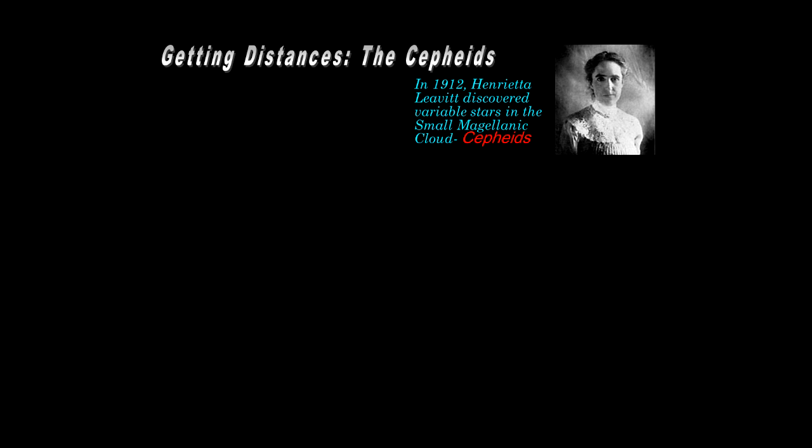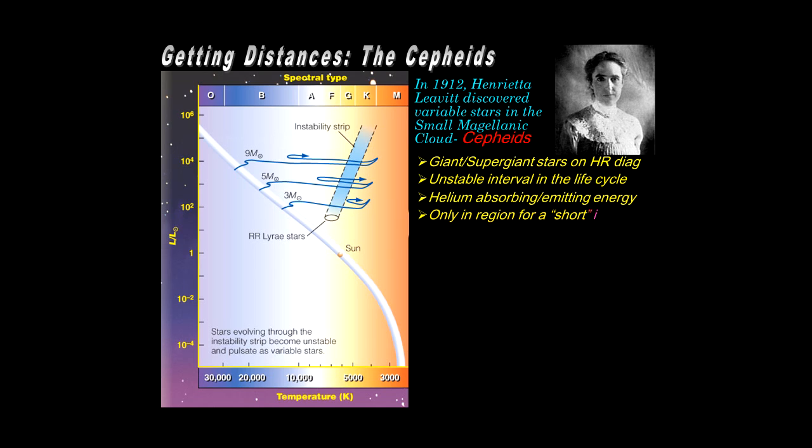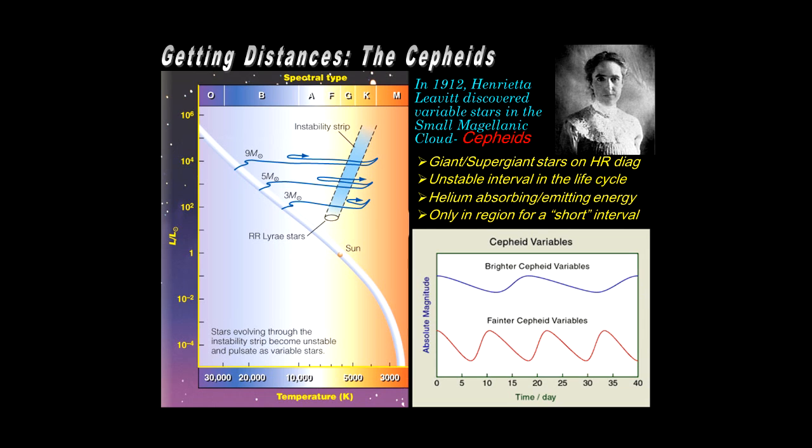A very key tool for discovering distances is one we've already encountered, and they are the Cepheids. It was in 1912 that Henrietta Leavitt discovered these variable stars studying the small Magellanic Cloud. And here, just for review, is once again what it looks like on an HR diagram, and especially giant and supergiant stars in the instability region as they move back and forth across here. They're unstable in this part of their life because they're absorbing and emitting photons as a result of their interaction with helium. And they're doing this for a short period of time, but during that time...